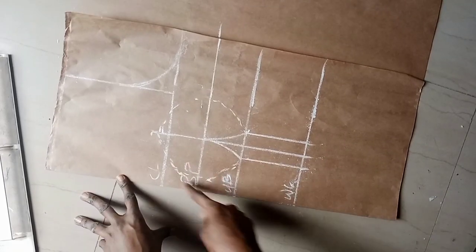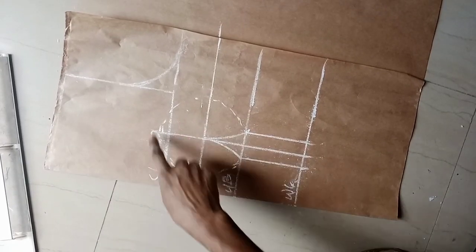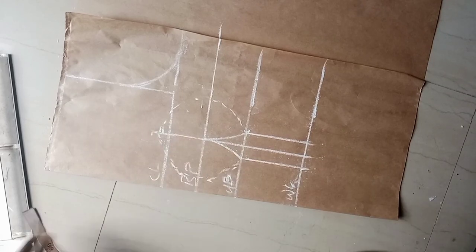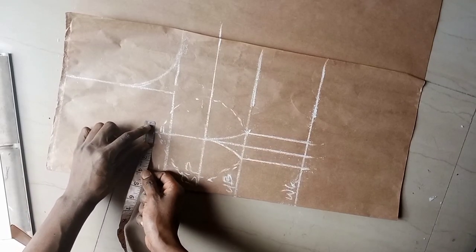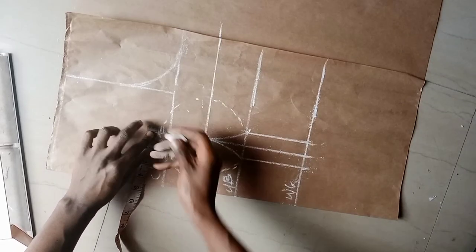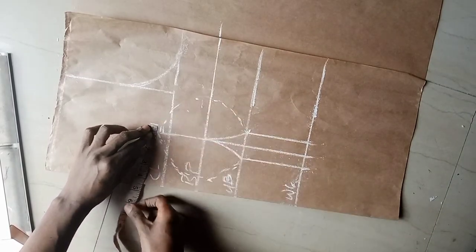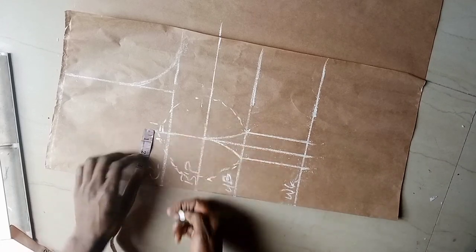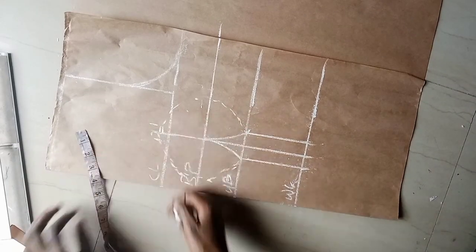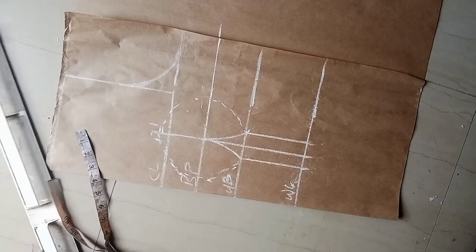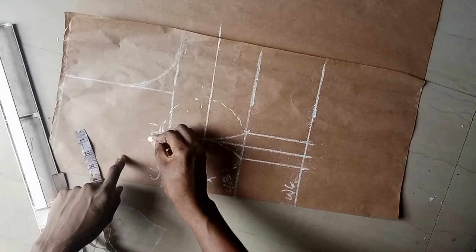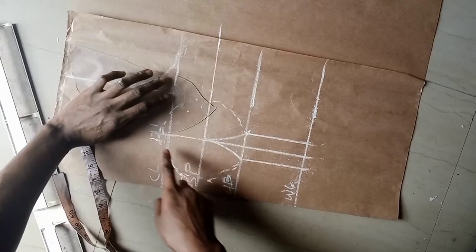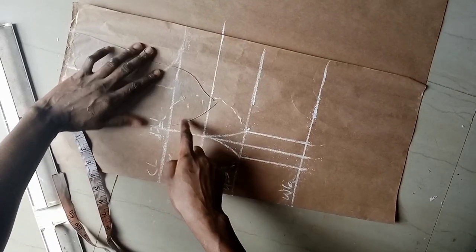After doing the second now, from here I'll mark half an inch, half an inch here, and another half an inch here. So like what I did down here, I'll do the same thing over here. So from here, I'll connect it to this bust point.